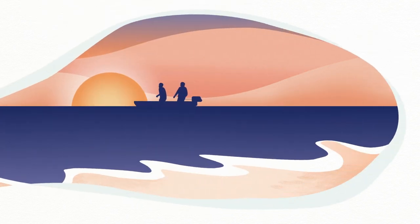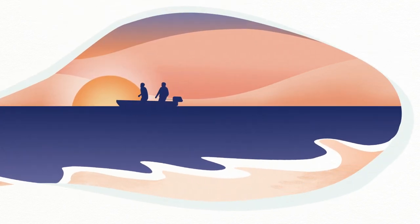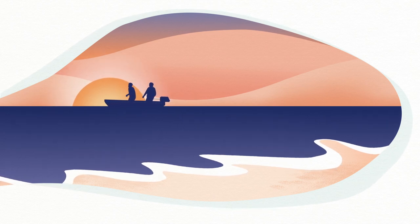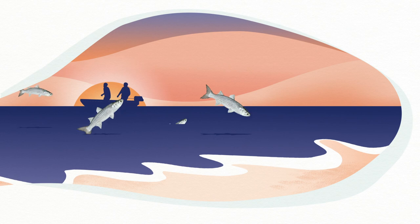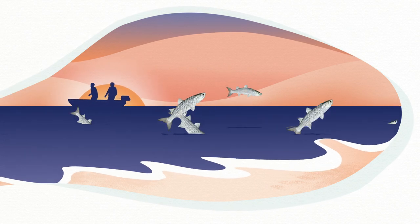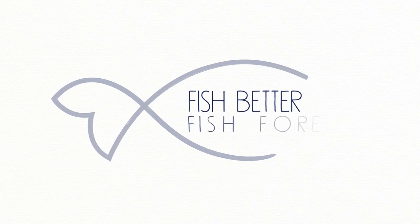However, we can help mullets in their journey. For example, we could change the way we fish to allow enough of them to reproduce. That way, we'll have more mullets to catch and eat for many years to come. Fish better. Fish forever.